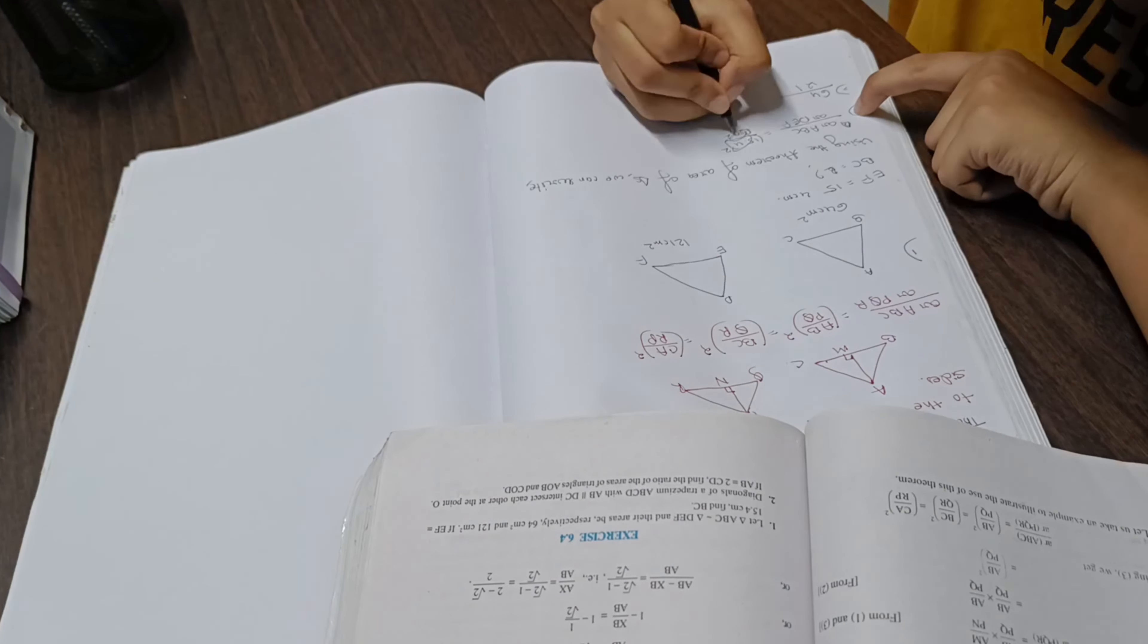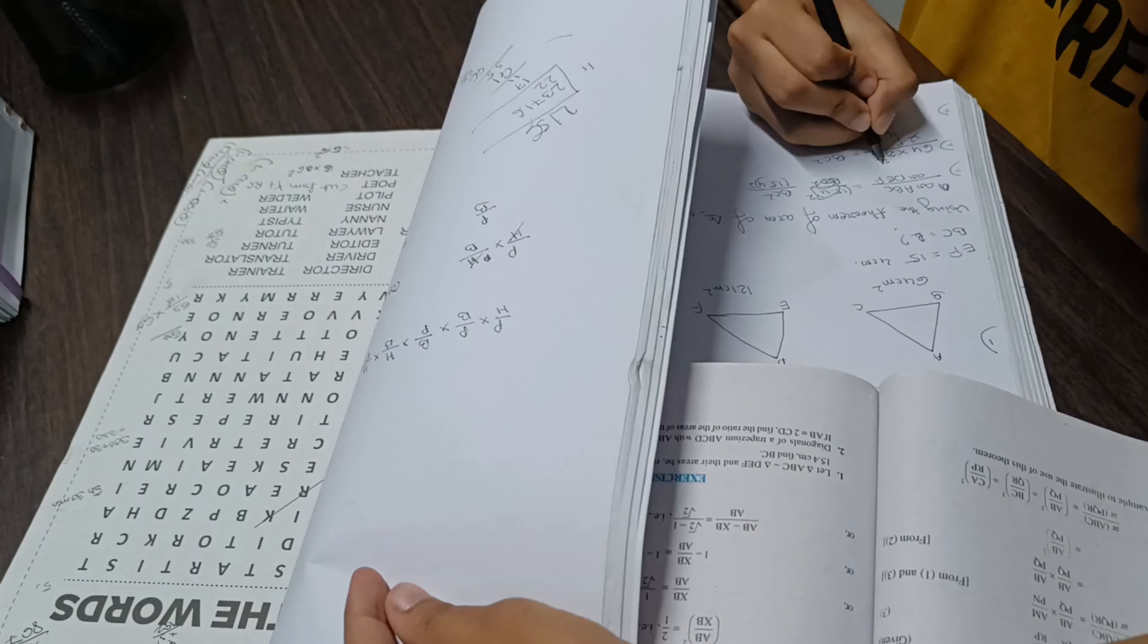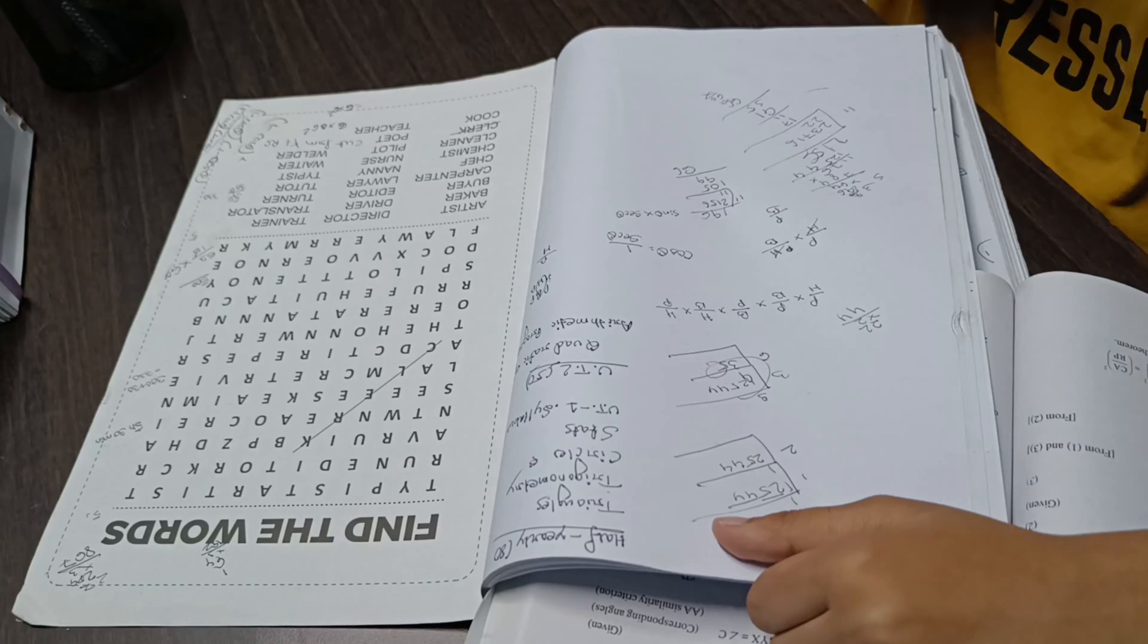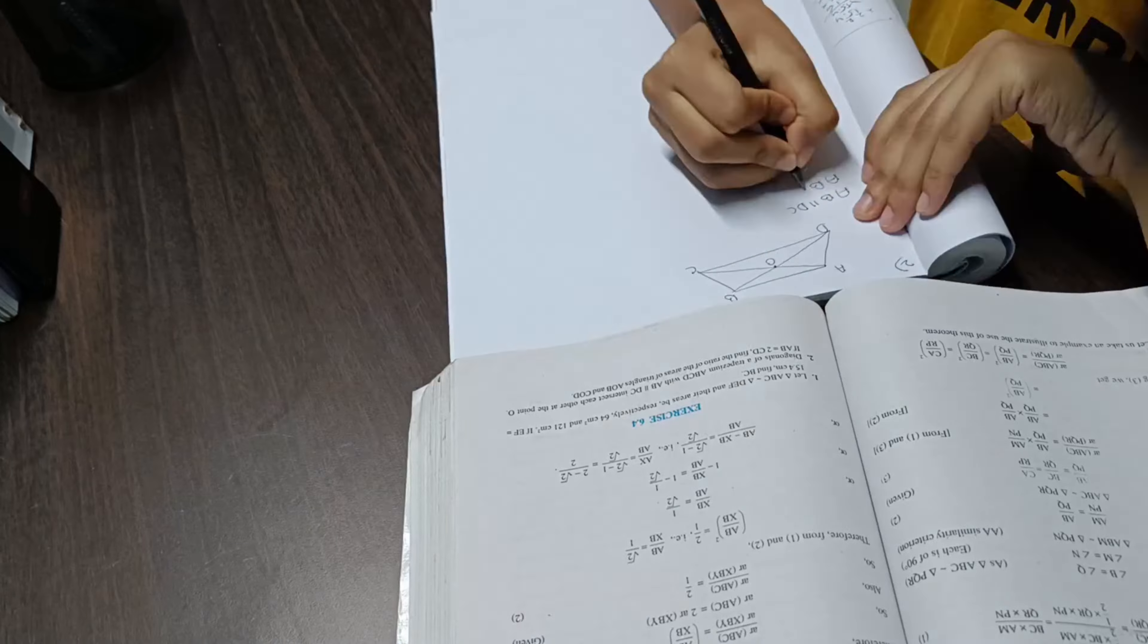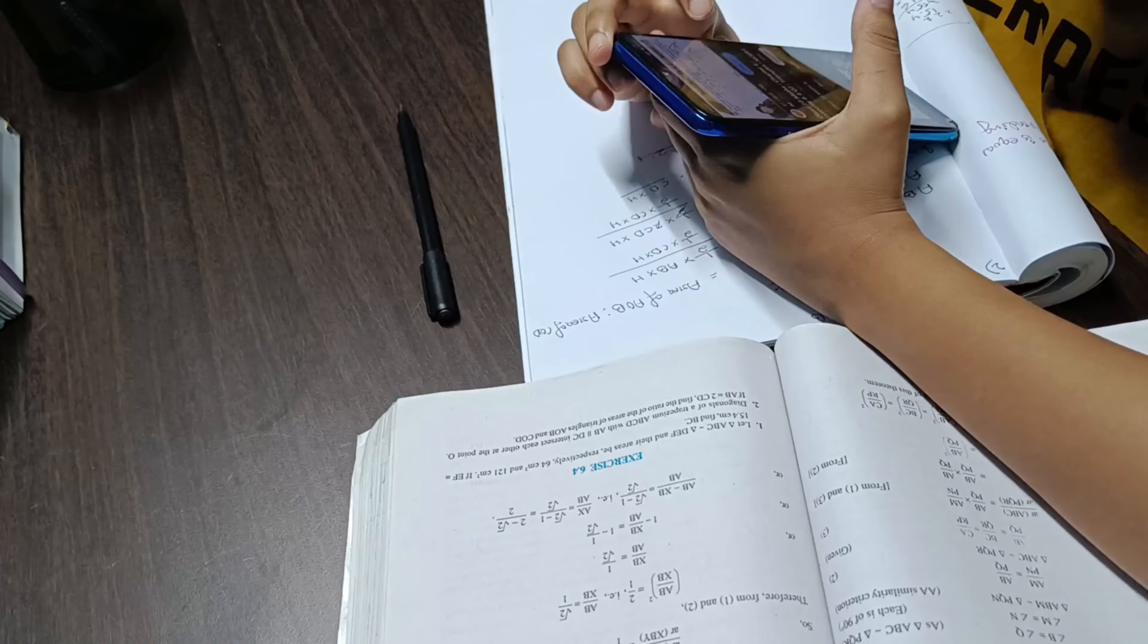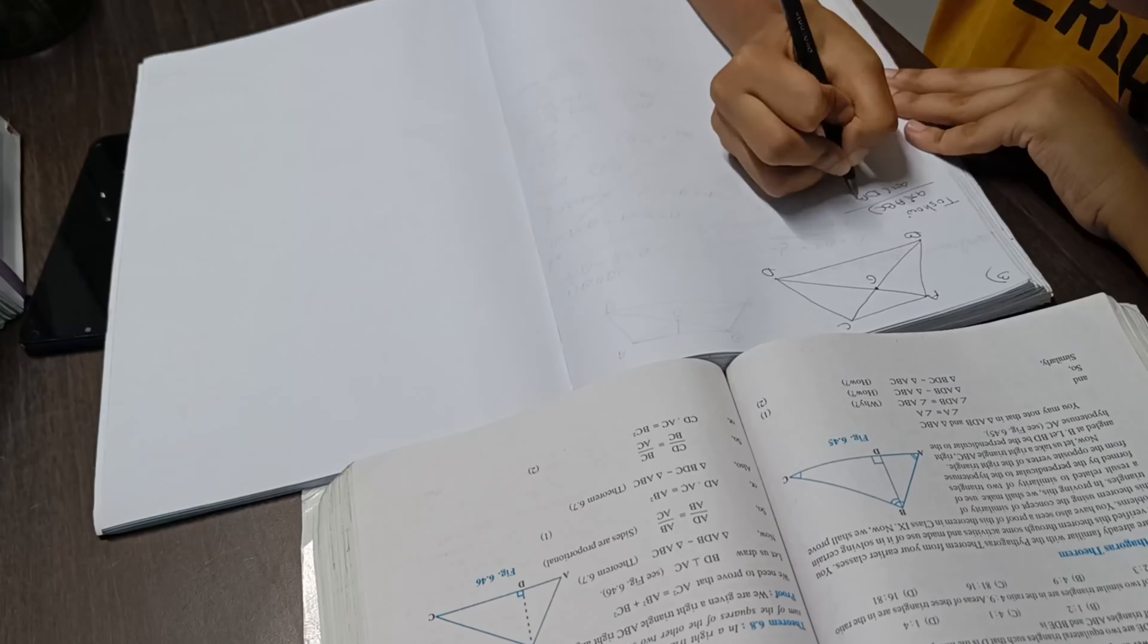So you guys have been asking me about my syllabus. Let me go subject wise. From maths, I have completed real numbers, polynomials, linear equations in two variables, surface area and volume, trigonometry, introduction to trigonometry and I'm currently doing the chapter triangles.